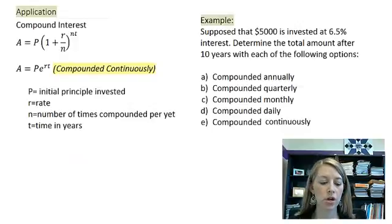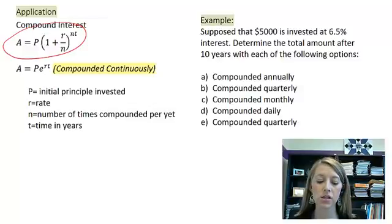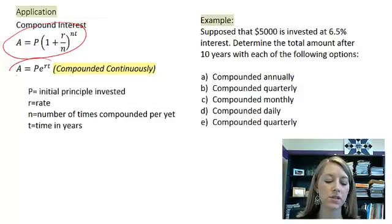We learned earlier about the compound interest formula, which is this here, but what happens if we were to compound it continuously? That would actually change our formula a little bit. If we were to compound it continuously, then that would give us this formula here.